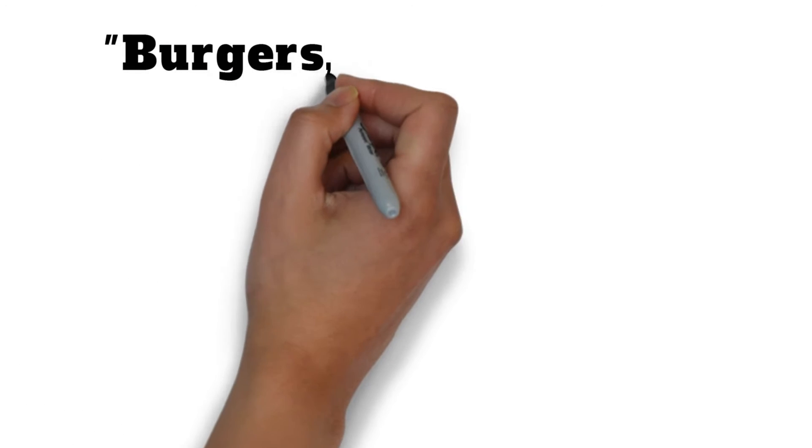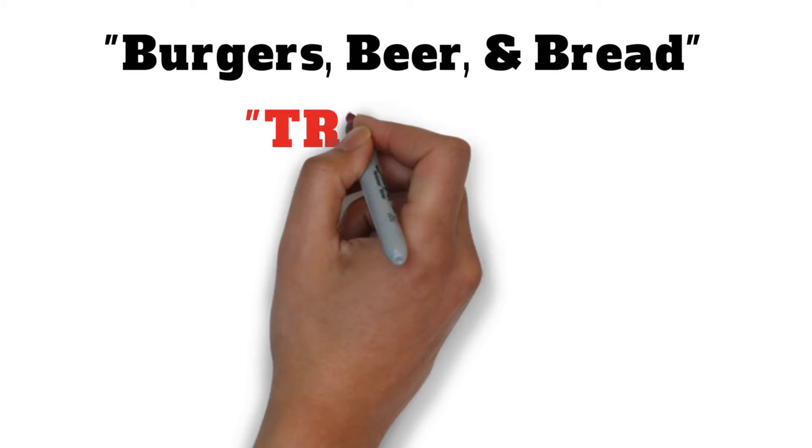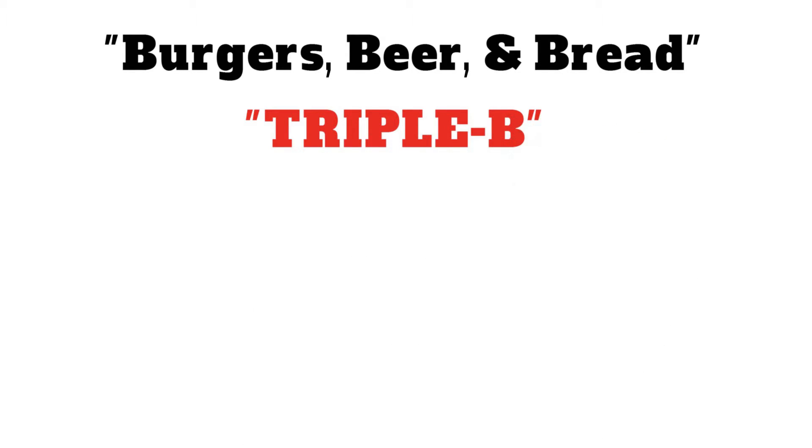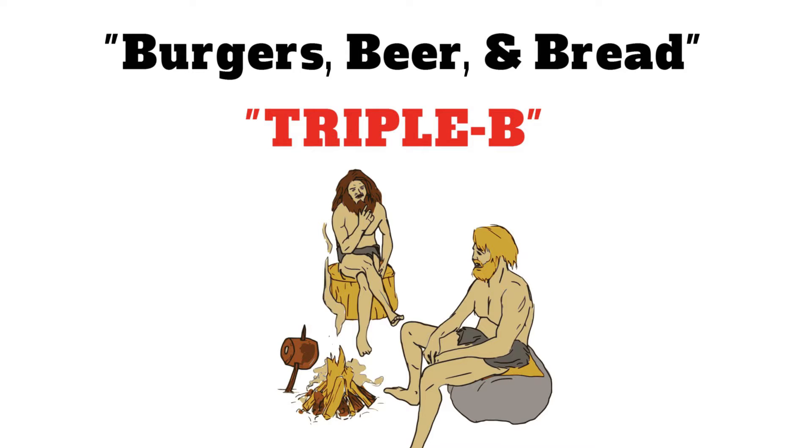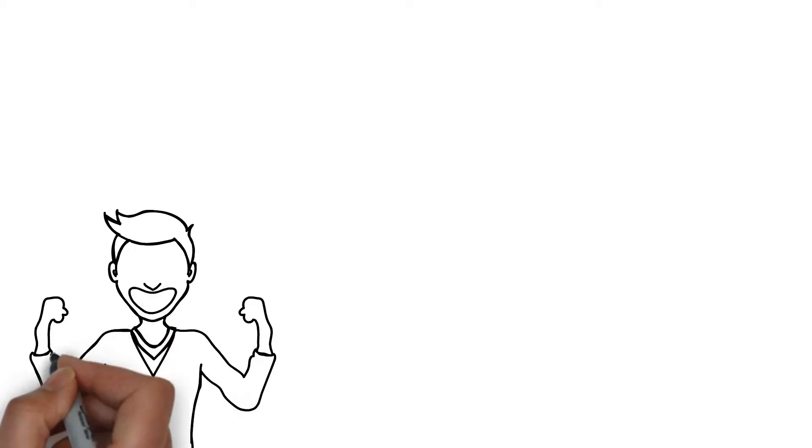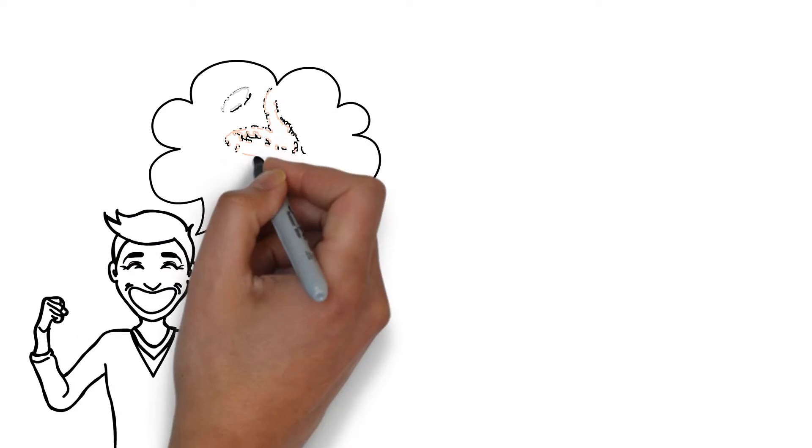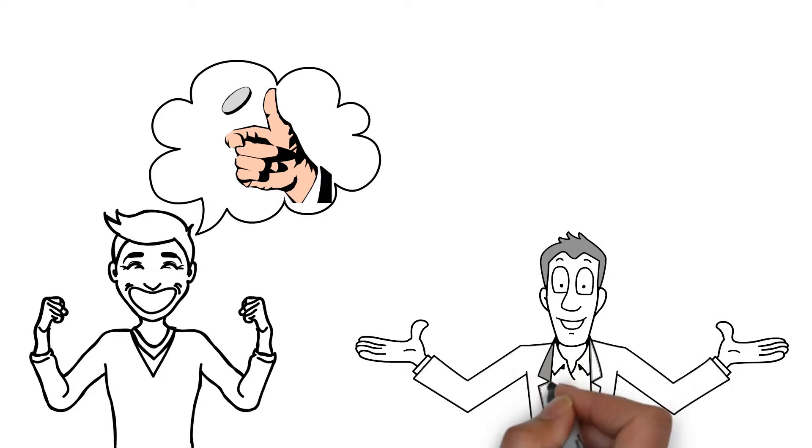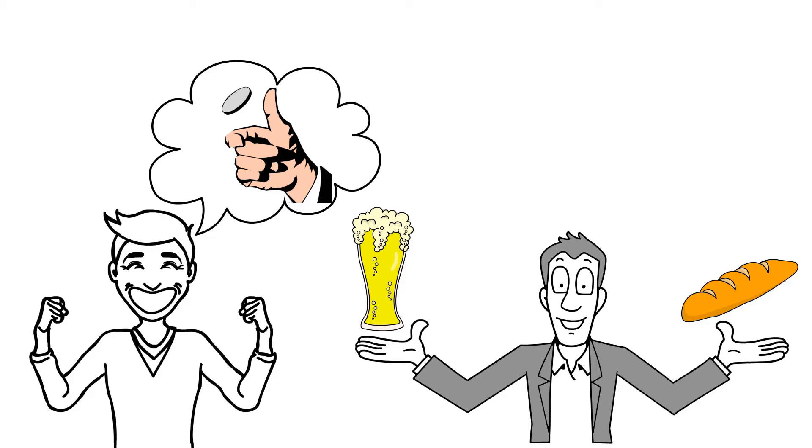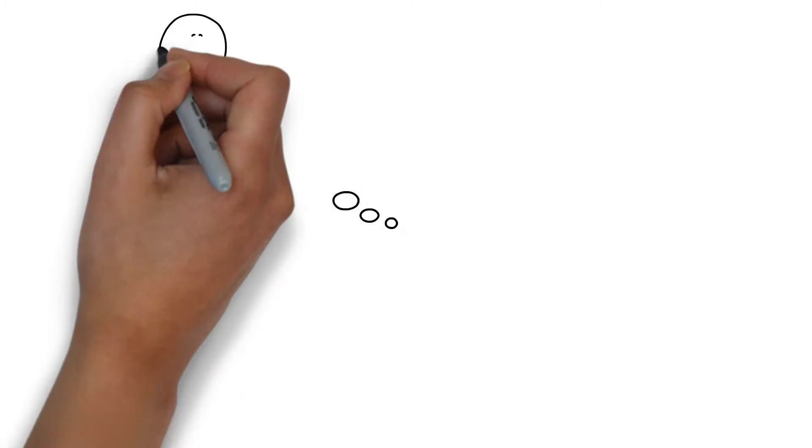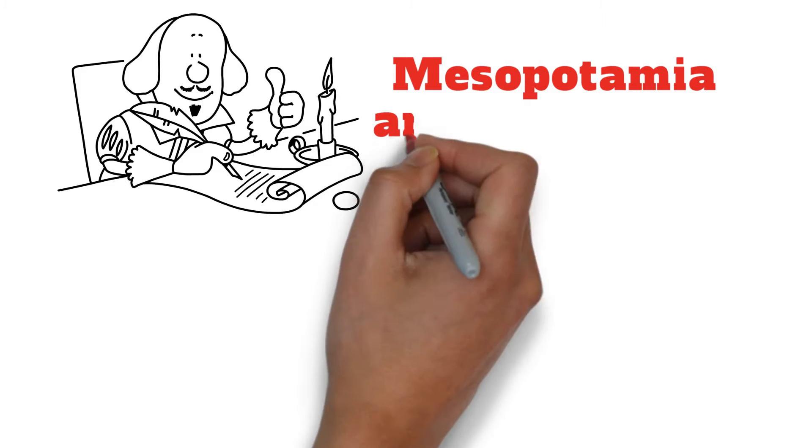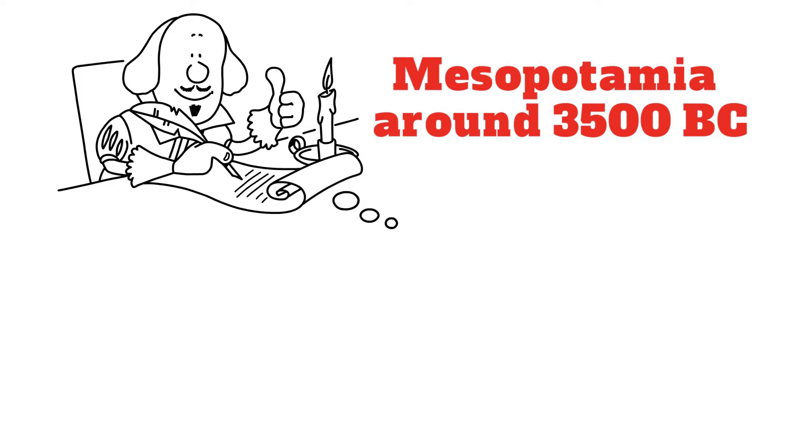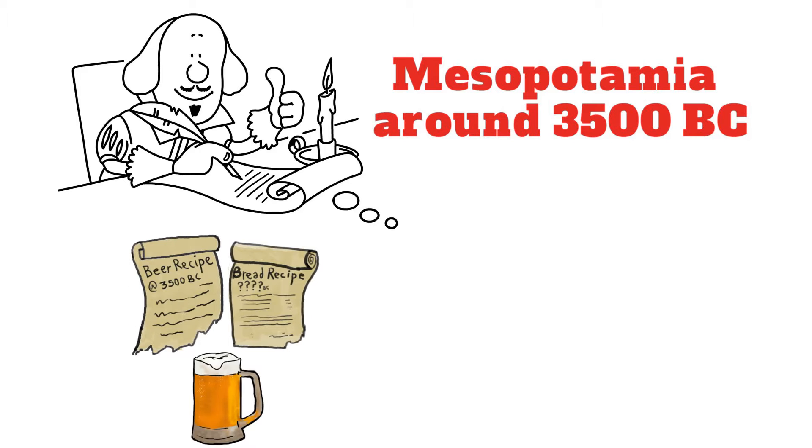Chapter 8 is titled Burgers, Beer, and Bread. I call it Triple B, and it starts off with our prehistoric ancestors sitting around the first barbecue, a campfire. I talk about the oldest recipes known to man, and it turns out to be a toss-up between which came first, beer or bread. The first written recipe in history comes from Mesopotamia around 3500 BC, and it is for beer.